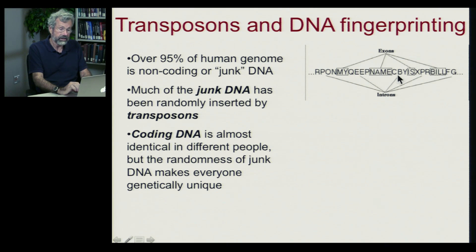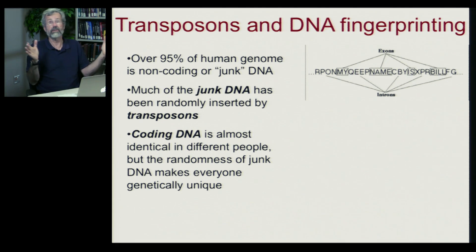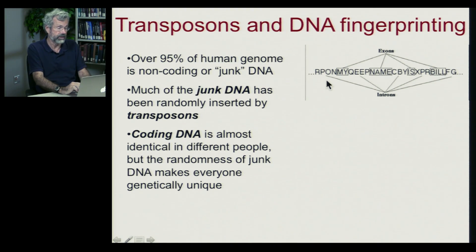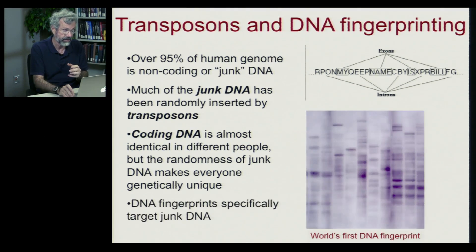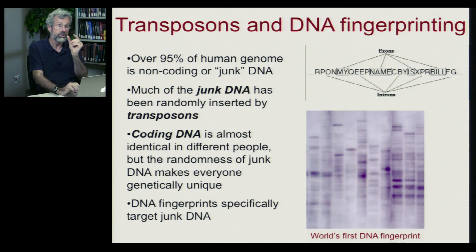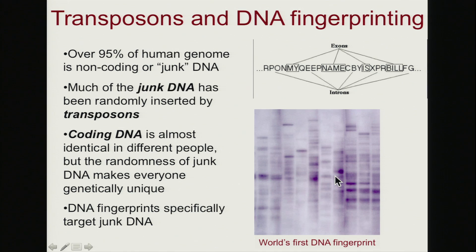The coding DNA — the bits that do have a function and end up as proteins — are incredibly similar from one individual to the next. For example, 99% of a stretch of hemoglobin is the same between individuals. But the way junk DNA gets passed around and inserted into different parts of chromosomes means those non-coding regions are quite random and very different from one individual to the next. DNA fingerprinting was developed using probes that specifically target those junk DNA regions and slice the DNA into different-sized chunks depending on the precise sequence, and no two individual humans are exactly the same.